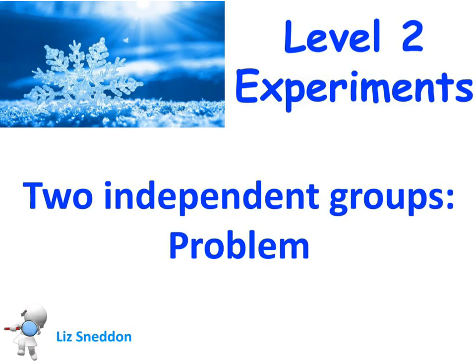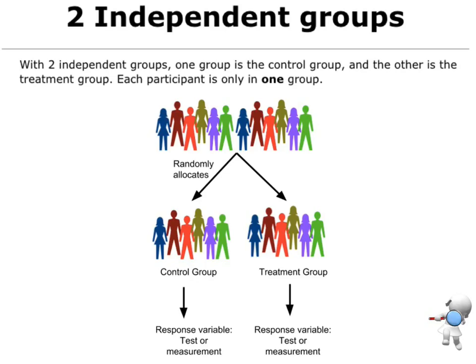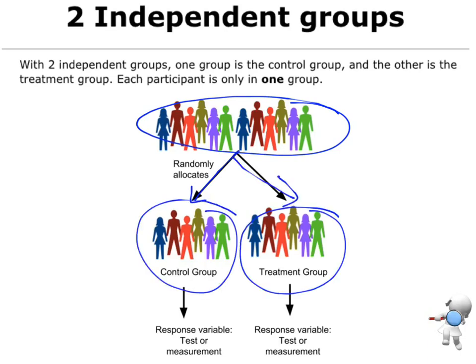Let's have a look at writing our investigation question when we've got two independent groups that we're designing experiments for. We start with our group of people — all of the students or people that we're interested in — and we're going to randomly allocate them into either the control group or the treatment group. Each person goes into one of these groups, and then we do some kind of test or measurement on those people in each group.